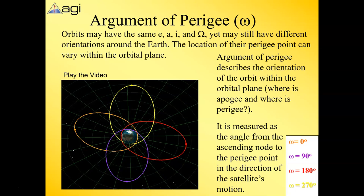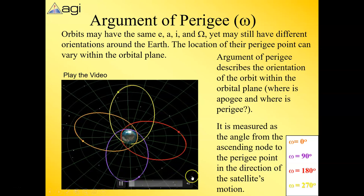Finally, the last component we need to look at is something called the argument of perigee. Actually, I take that back—there's one more after this. The argument of perigee is a little omega. These four orbits have the same e, a, inclination, and RAN, yet they're different. We want to know, if everything else is equal, where is perigee and where's apogee?